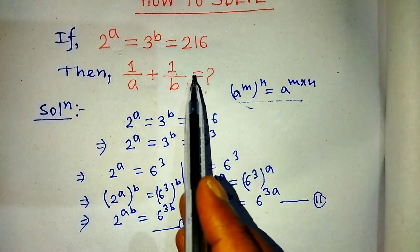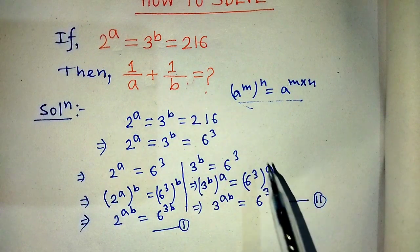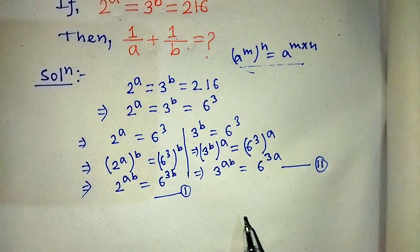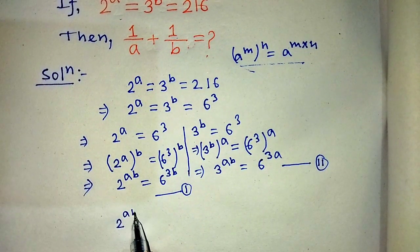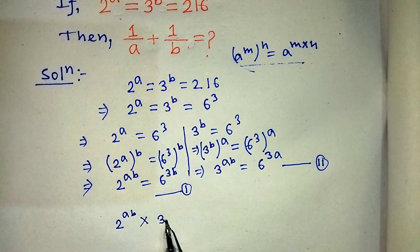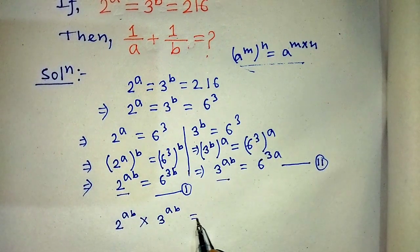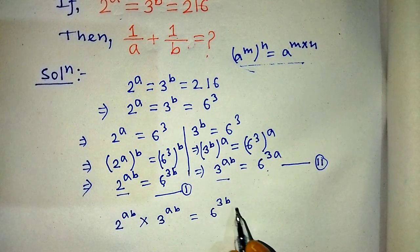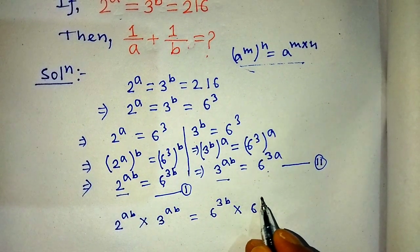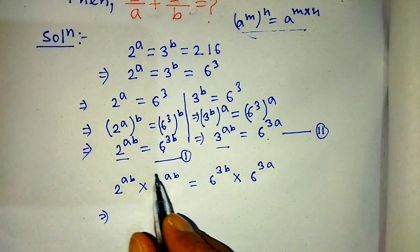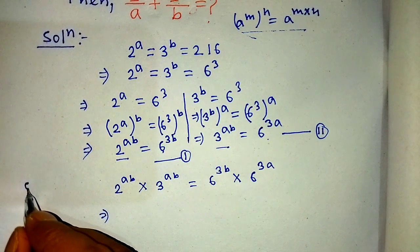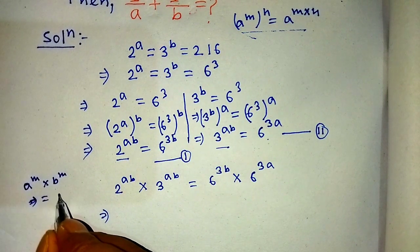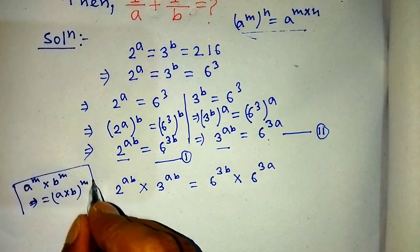To find the value of 1 over A plus 1 over B from these equations, we multiply equation 1 and equation 2 together — left side by left side, right side by right side — giving us 2 to the power AB times 3 to the power AB, equal to 6 to the power 3B times 6 to the power 3A.